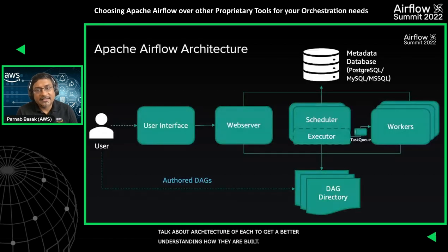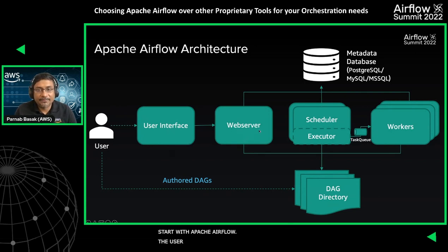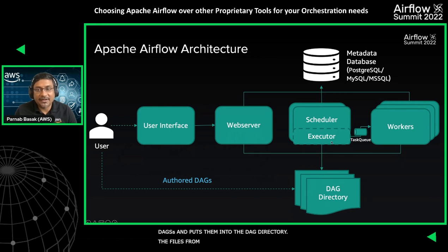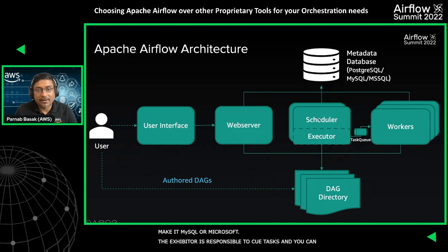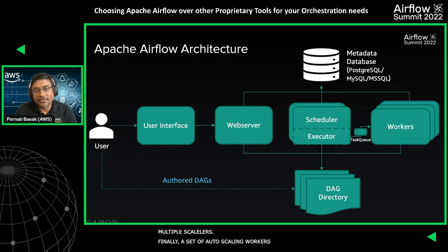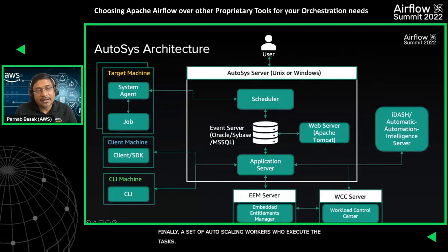Let's talk about the underlying architecture of each tool. In Apache Airflow, the user interacts with the UI which sits on top of a web server. The user authors DAGs — Directed Acyclic Graphs — written in Python and puts them into the DAG directory. The scheduler parses the files, inserts metadata to a database configurable as PostgreSQL, MySQL, or Microsoft SQL Server. The executor handles running tasks using a task queue, and an autoscaling set of workers pulls from the task queue and executes those tasks.